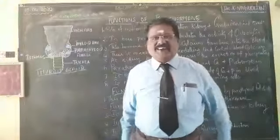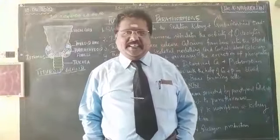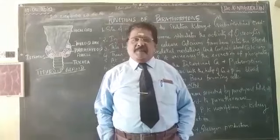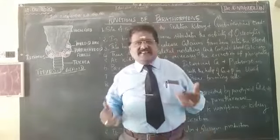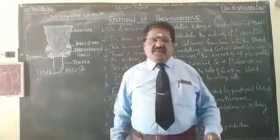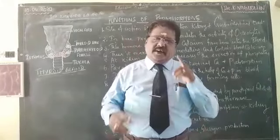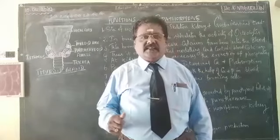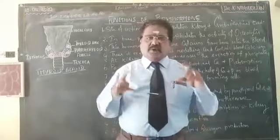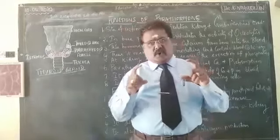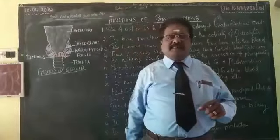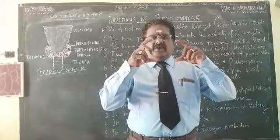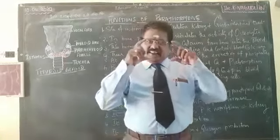Good morning students. Today I am going to explain the second endocrine topic: the parathyroid gland. The parathyroid gland is another endocrine gland located in the thyroid gland. It exists in the form of two pairs of lobes, small and oval in shape.